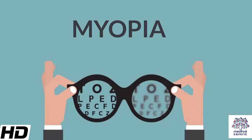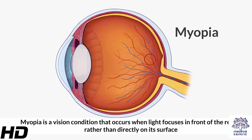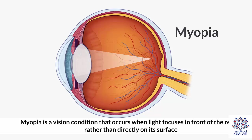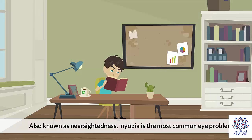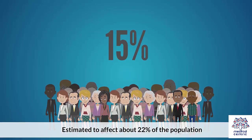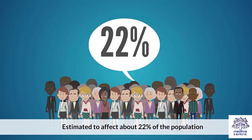Today's topic is myopia. Myopia is a vision condition that occurs when light focuses in front of the retina rather than directly on its surface. People suffering from myopia are able to see near objects clearly, while objects that are far are blurry. Also known as nearsightedness, myopia is the most common eye problem, estimated to affect about 22% of the population.